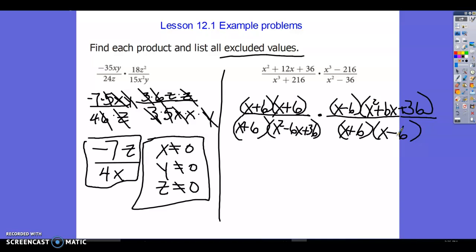And then we'll look and see what we can reduce. So we've got an x plus 6 here. We've got an x plus 6 here. x minus 6 here. And so we're left with x squared plus 6x plus 36 over x squared minus 6x plus 36.